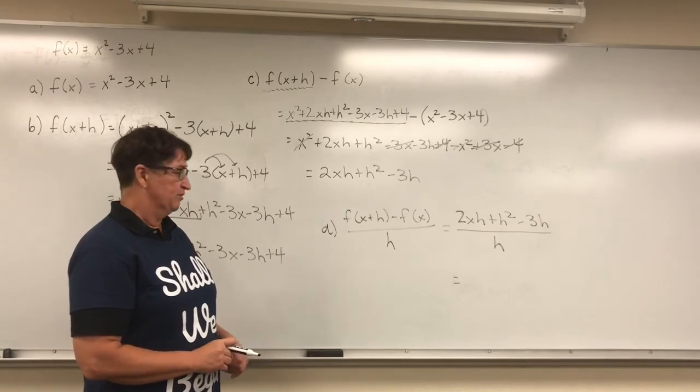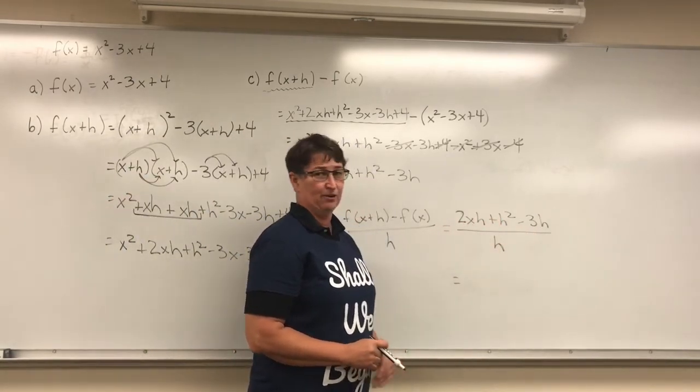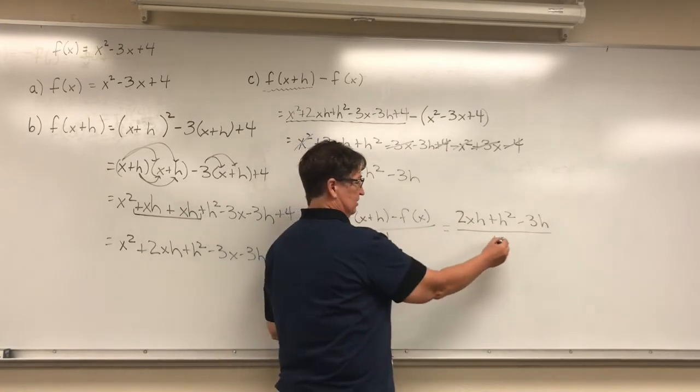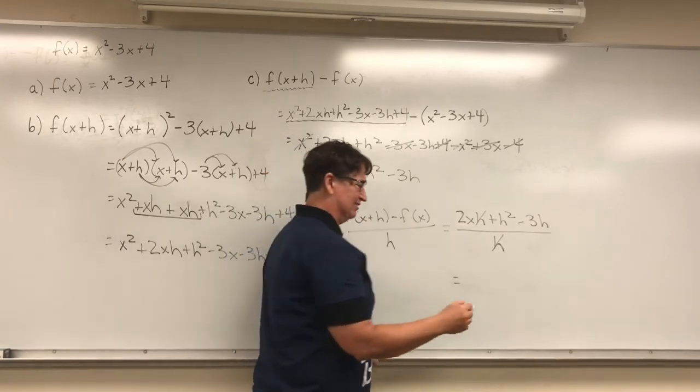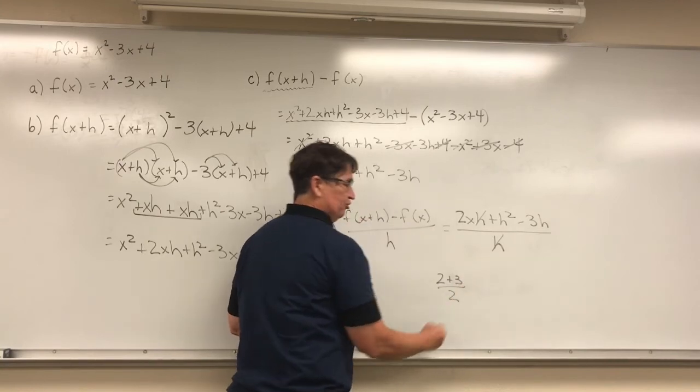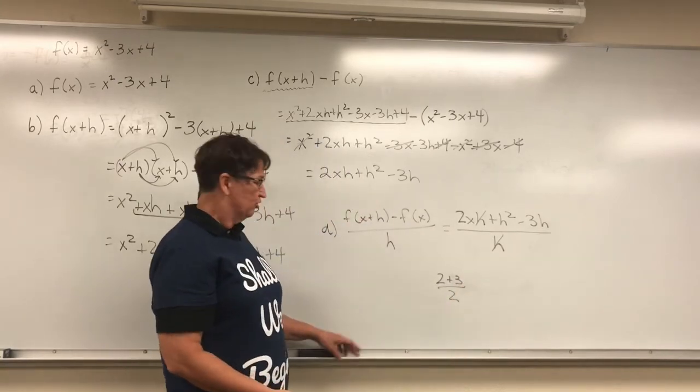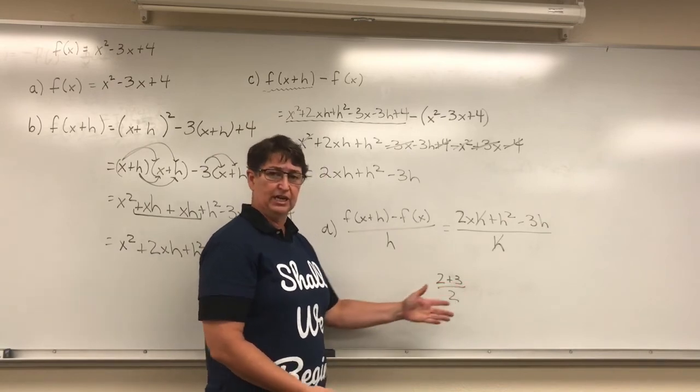Now I'm going to do some simplification. This fraction, we have to be careful because we cannot just cancel out this h and that h. That's not okay. For instance, if I had, let's just pretend for a minute that I had 2 plus 3 over 2. Well, you know that the way we'd solve this is we'd say 2 plus 3 equals 5, and then we would divide it by 2 to make it 5 halves.